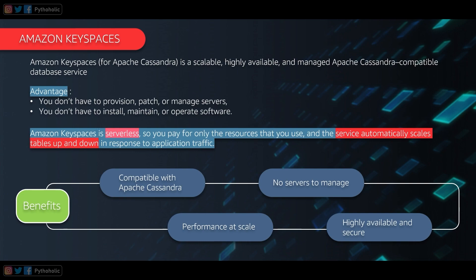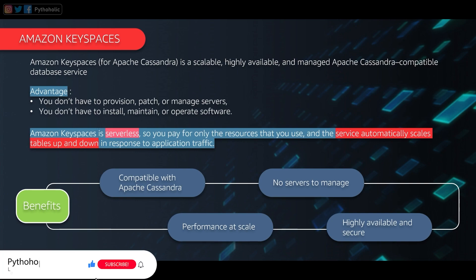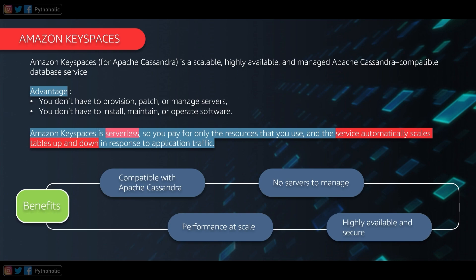The advantages of using Keyspaces: first, you don't have to provision, patch, or manage servers. Second, you don't have to install, maintain, or operate Apache Cassandra software. This means less overhead on managing clusters and nodes. Amazon Keyspaces is also serverless — you pay for the resources you use, and the service automatically scales tables up and down in response to application traffic.